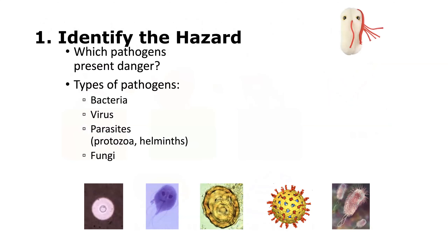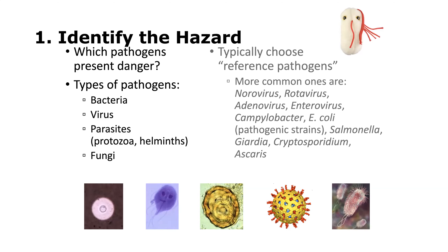The first step is to identify the hazard, often using a reference pathogen — selected based on which pathogens present the greatest danger. A reference pathogen may be chosen from each of the four groups, and fungi may also be included. Typical reference pathogens include norovirus and rotavirus for viruses; Campylobacter, E. coli, and Salmonella for bacteria; and Giardia and Cryptosporidium for parasites.